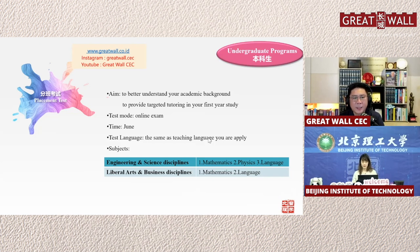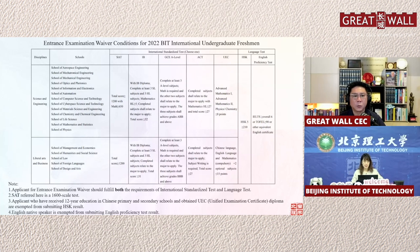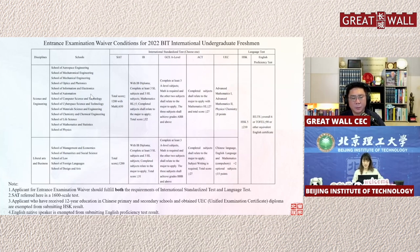For students who have already taken international standard tests such as the SAT, IB, A-Level, or ACT, if you reach a high enough score — as listed in the chart — you can be waived from the placement test, because BIT already knows your level from those standardized results.